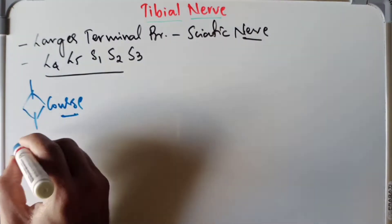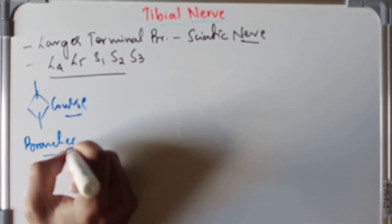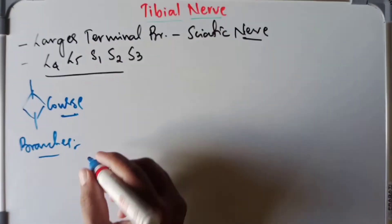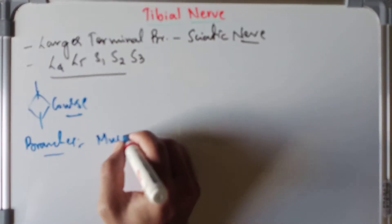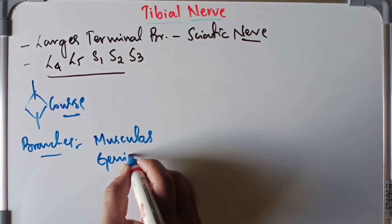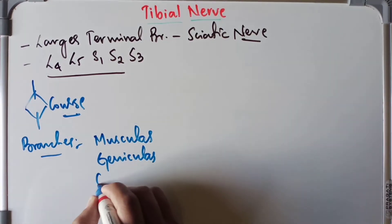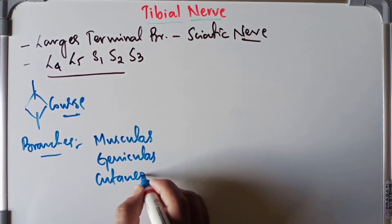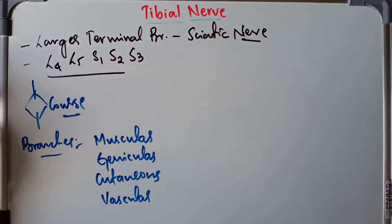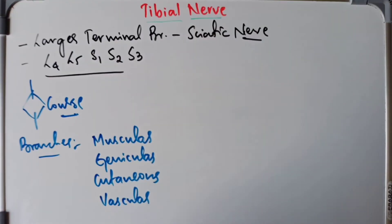Now let's discuss the branches of the tibial nerve. It is going to supply muscular branches, genicular branches, cutaneous branches, as well as vascular branches. So remember carefully — these are the four different types of branches of the tibial nerve.